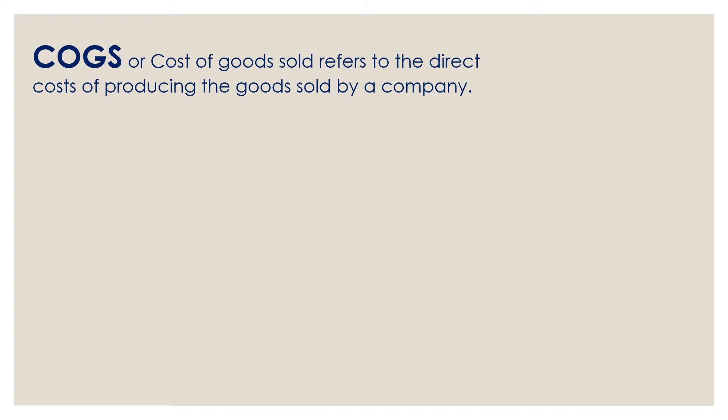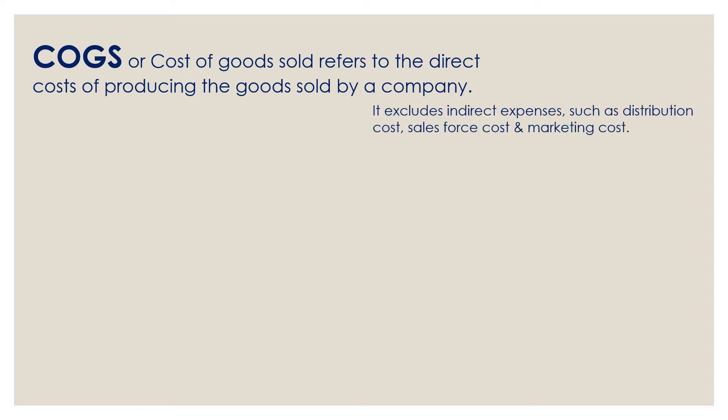Now that we know about revenue, let's look at the next term called COGS. People often confuse what this fancy term COGS is. COGS, or cost of goods sold, refers to the direct cost of producing the goods sold by a company. It's the direct cost incurred by a company to produce the goods. Please note it excludes indirect expenses such as distribution cost, salesforce cost, and marketing cost.